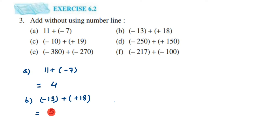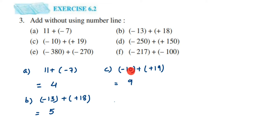The next one is minus 10 plus plus 19, similar to the previous question. Both integers have different signs, so we subtract: 19 minus 10 is 9. Which number is greater — 10 or 19? Nineteen is greater and its sign is plus, so the answer is plus 9, or simply 9.